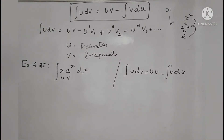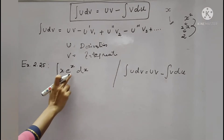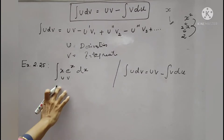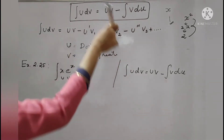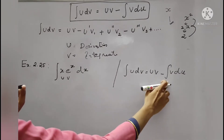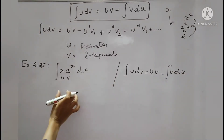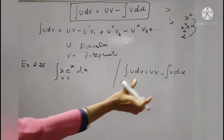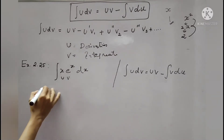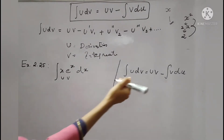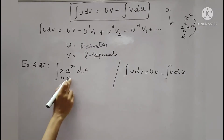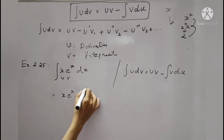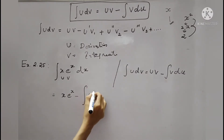Example 2.25: we will now solve the integral of x·eˣ dx. This is the uv method. The formula we use basically is: integral of u dv equals uv minus integral of v du. Here x is equal to u. We differentiate u and stop. We apply the formula. So uv — that is uv — minus integral of v, where v is nothing but eˣ, into du.